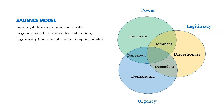Here's an example of the salience model. Remember, we're looking at three things: their power (ability to impose their will), the urgency (need for immediate attention), and their legitimacy (whether their active involvement is appropriate). If someone has a lot of power, is actually a legitimate stakeholder, and has immediate needs, those are stakeholders you really want to manage very closely, as they could affect a lot of change in the project — both positively or negatively.